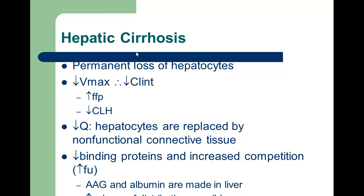In cirrhosis versus hepatitis, this is a permanent loss of the hepatocytes. We see a decrease in Vmax, which decreases intrinsic clearance. This decrease in intrinsic clearance will increase the fraction that escapes first pass effect for high extraction drugs, and it will decrease the hepatic clearance in general of low extraction drugs.